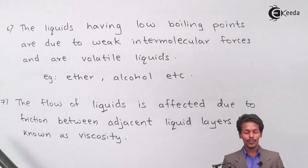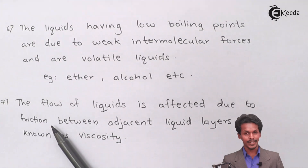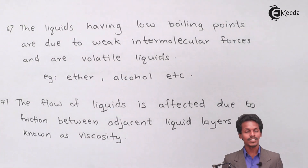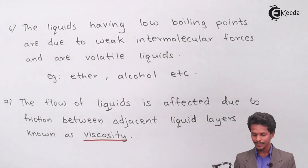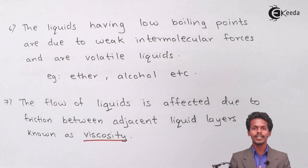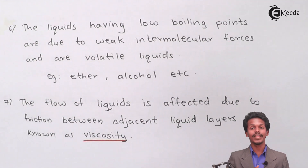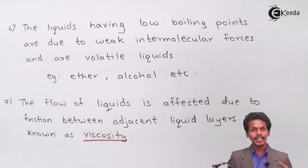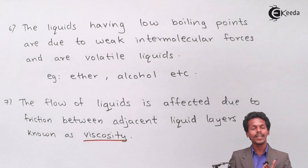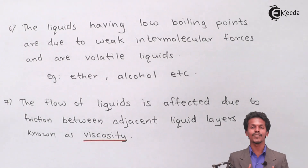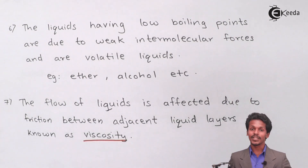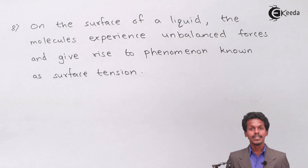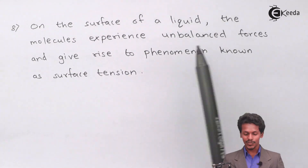Seventh: the flow of a liquid is affected by friction between adjacent liquid layers, a property known as viscosity. When a liquid is allowed to flow, the two layers of liquid experience friction with each other, which resists or slows the flow. This resistance to flow due to internal friction between liquid layers is called viscosity.